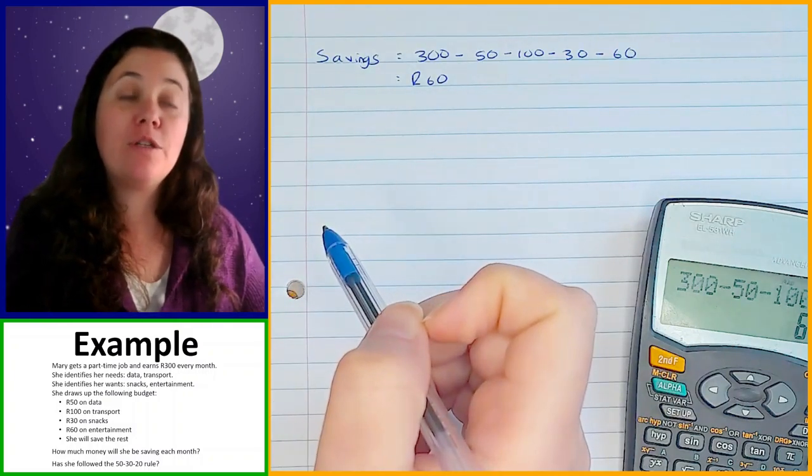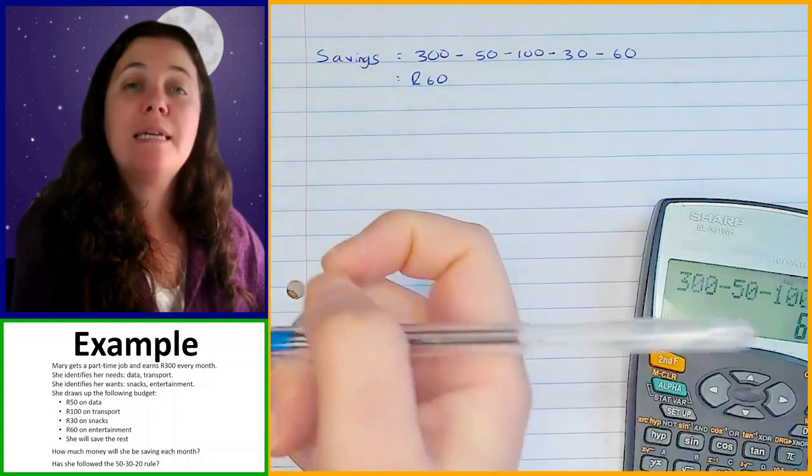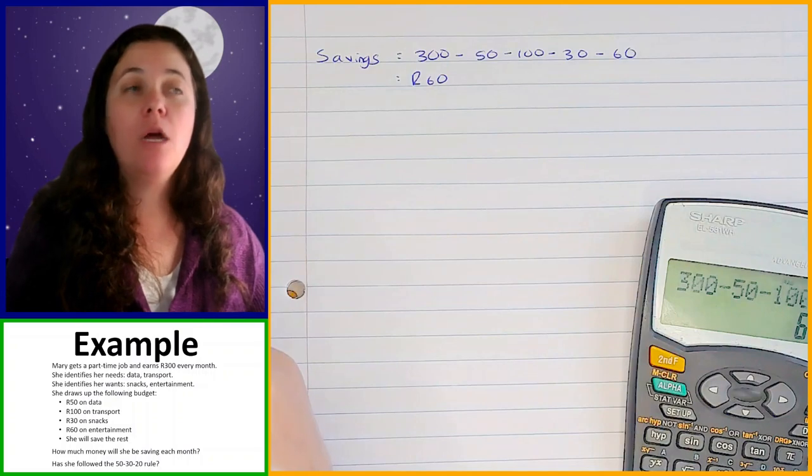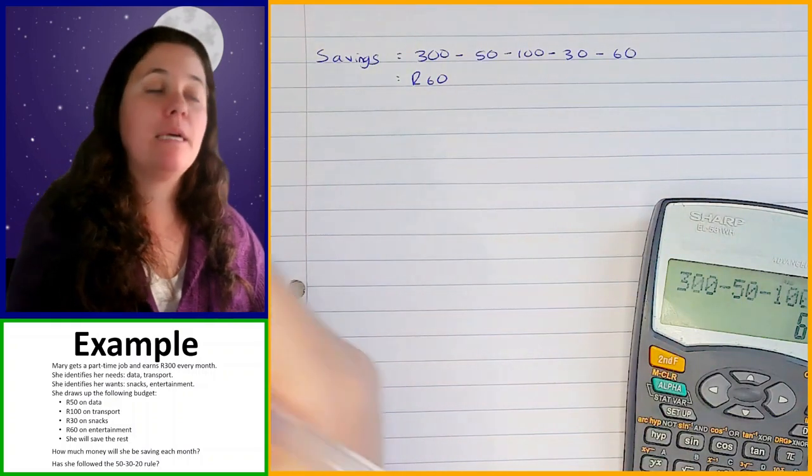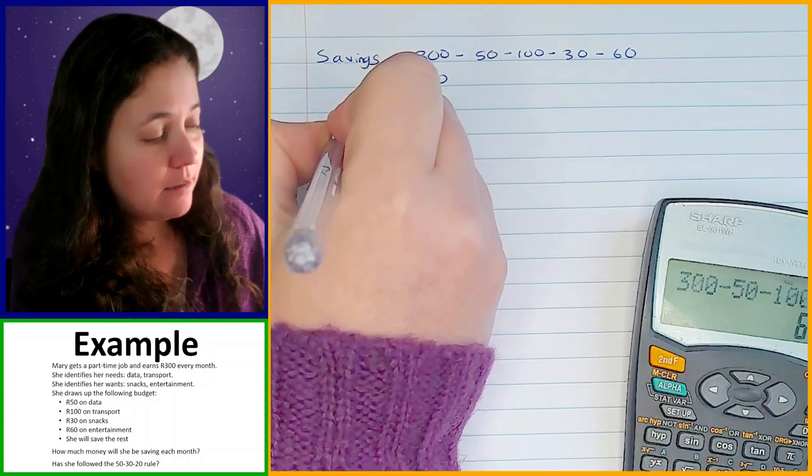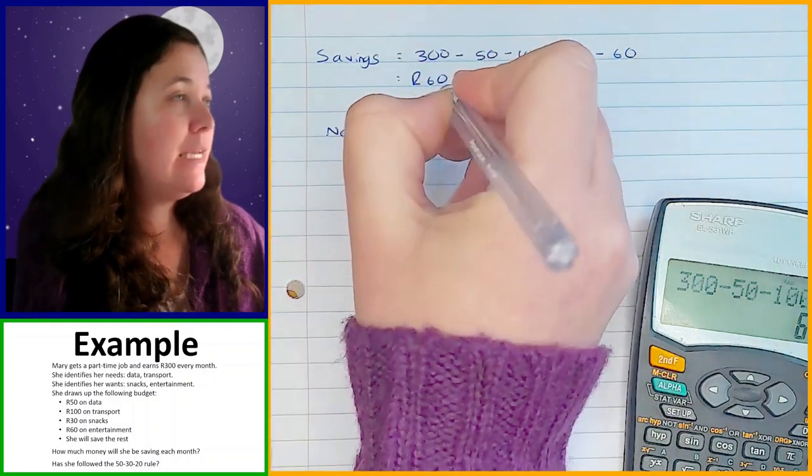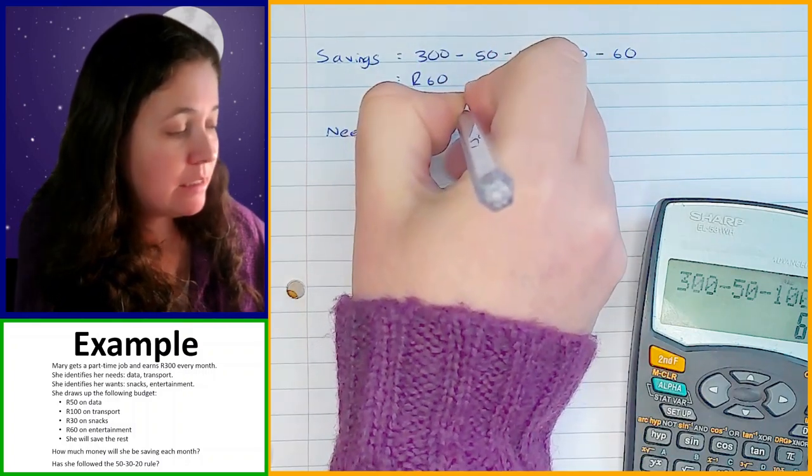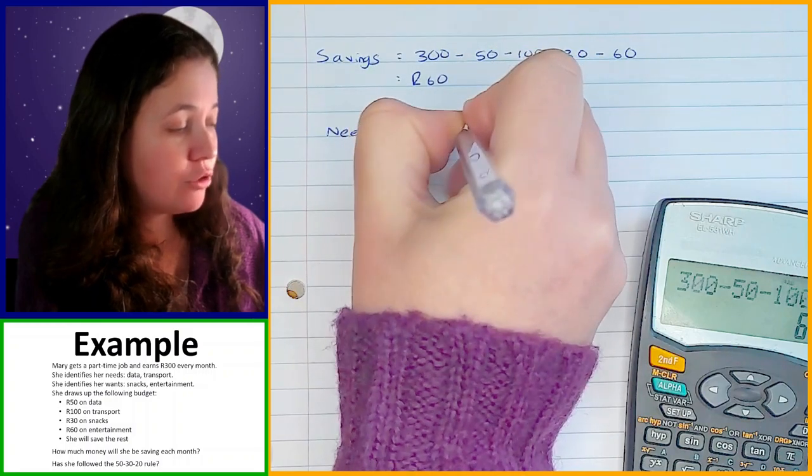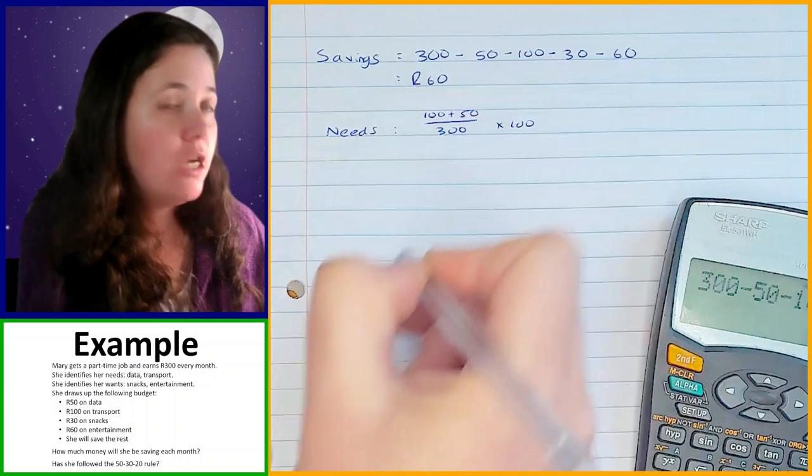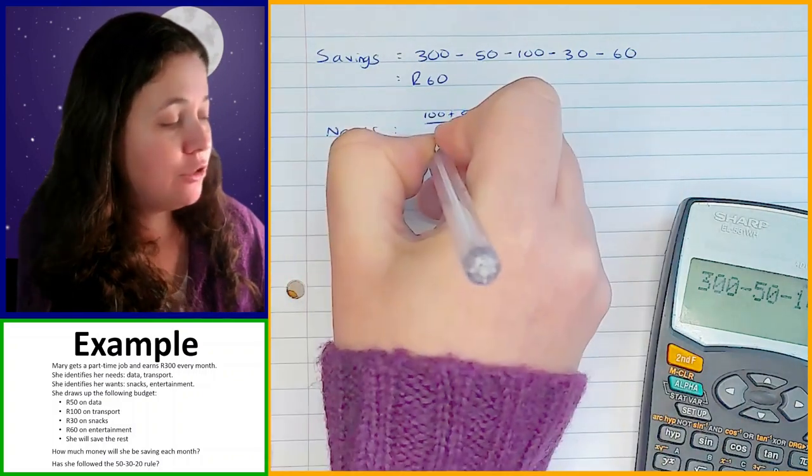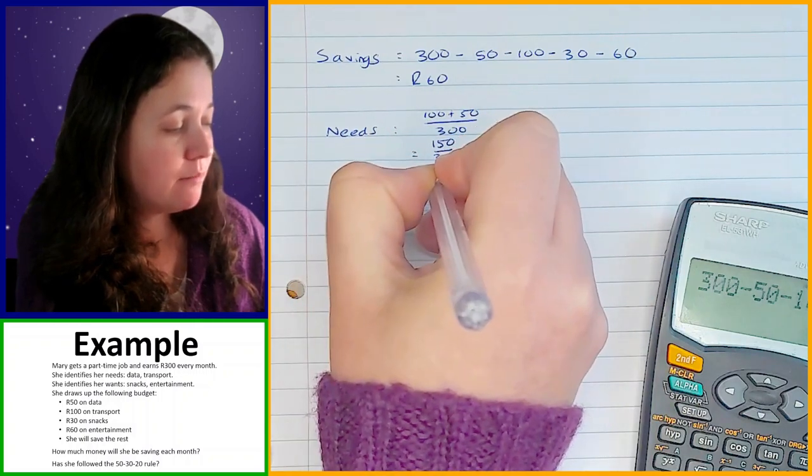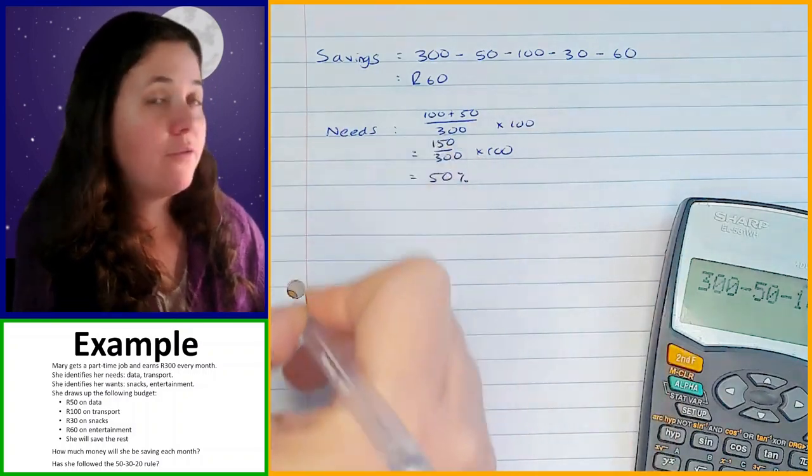Then to find out if she's followed the 50-30-20 rule, what we can do is we can work out what percentage she spent out of her total income on each of the different categories: her needs, her wants, and her savings. So first, let's have a look at needs. For her needs, she has spent 100 rand for transport and 50 rand for data. So that's 100 plus 50 out of a total of 300, and we multiply that by 100 to get a percentage. So that's 150 out of 300 times 100, and that gives you 50%.